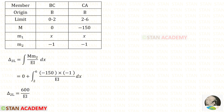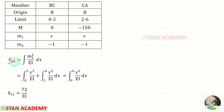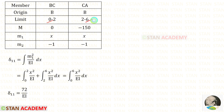Now let us find delta 2L. The formula is integration of M times M2 upon EI dx. Applying the values of M and M2, for delta 2L we will get 600 upon EI. Now let us find delta 11. The formula is integration of M1 squared upon EI dx. Since M1 is the same for both members and EI is constant, we do one integration from 0 to 6, giving delta 11 = 72 upon EI.